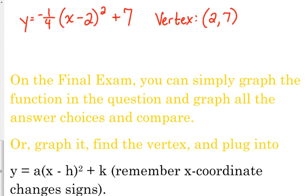And then this as well. On the final exam, if they're asking you a question about vertex form and you can't remember how to complete the square or maybe it just totally didn't make sense to you when I just explained it, all you have to do is graph the function in the question and graph your answer choices and compare. See which one gives you the same parabola. Or you could graph it, find your vertex, and then you know, remember to change the signs of your x. That's one way it would take you a little bit.